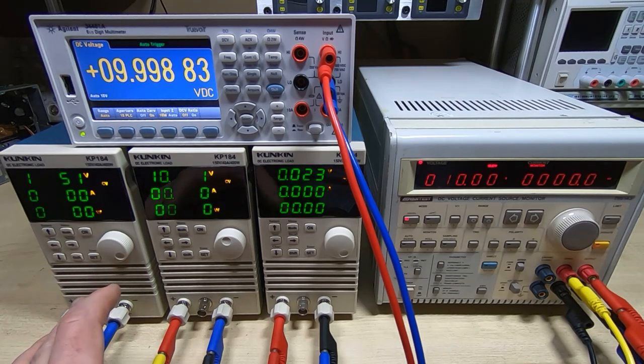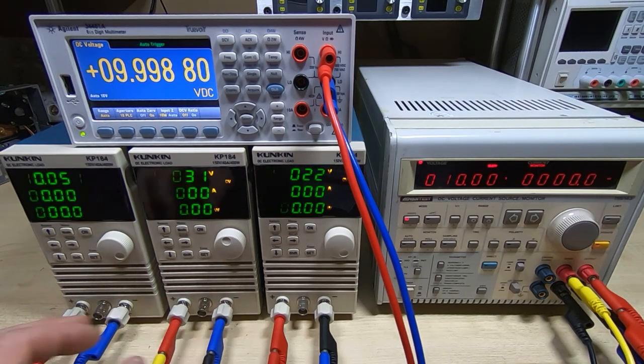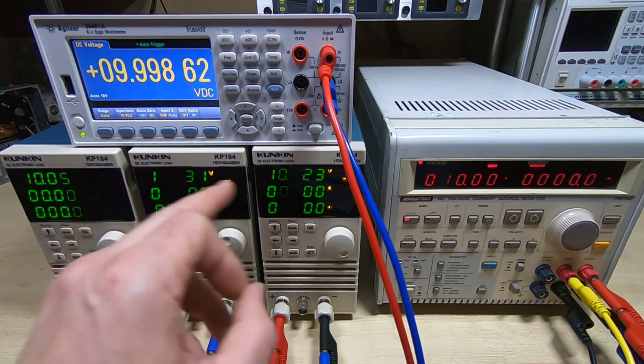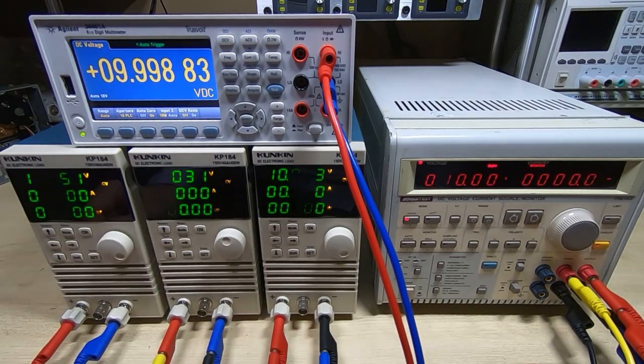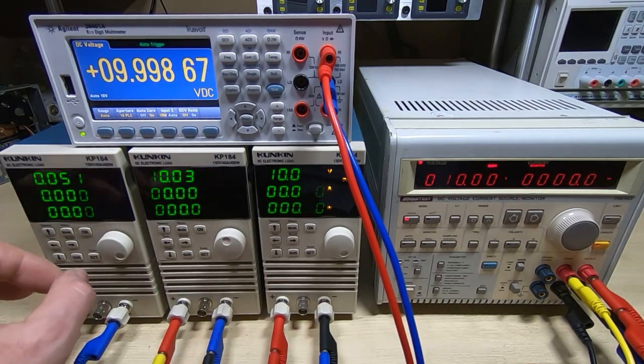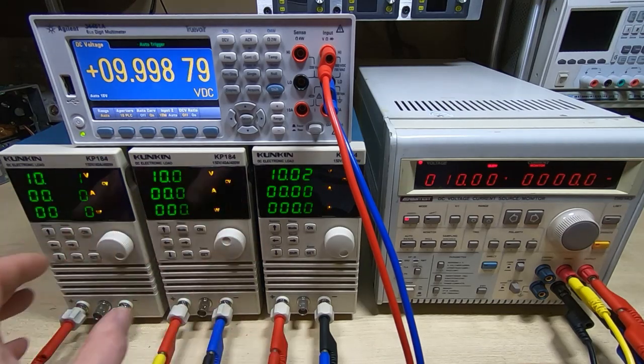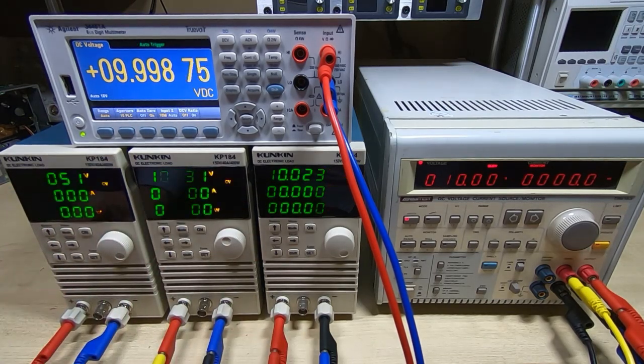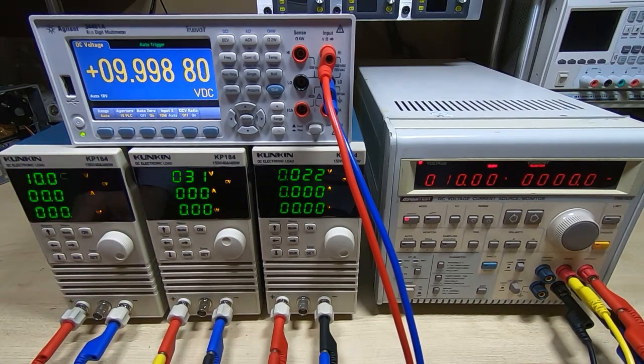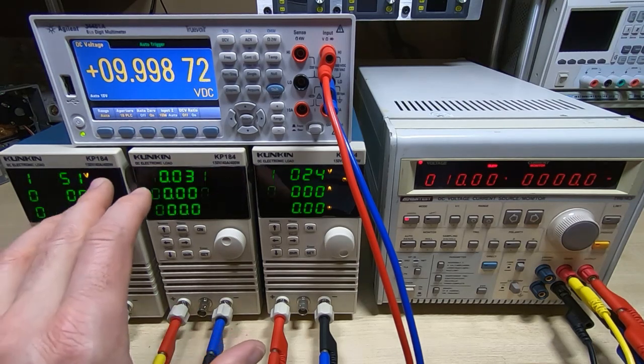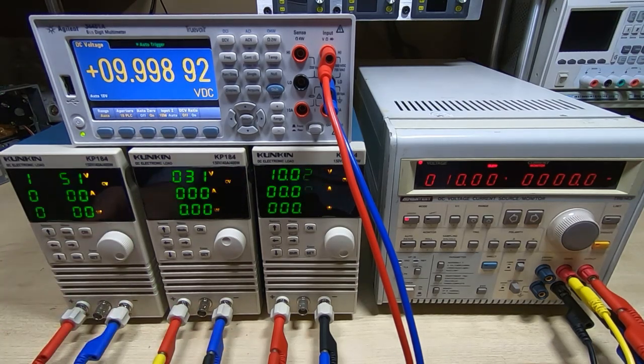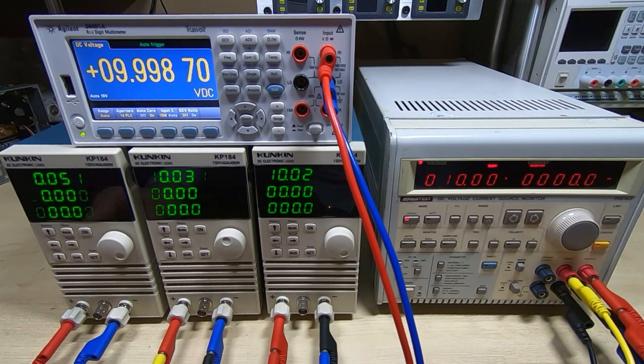If you put in the wrong values or if you abort the process or get the process wrong, you'll end up with ridiculous readings on the display. So if when you finish you're getting what are obviously wrong readings, then just go through the process again. It's fairly straightforward but it is a bit blind in the way that the KP184s respond to this process.